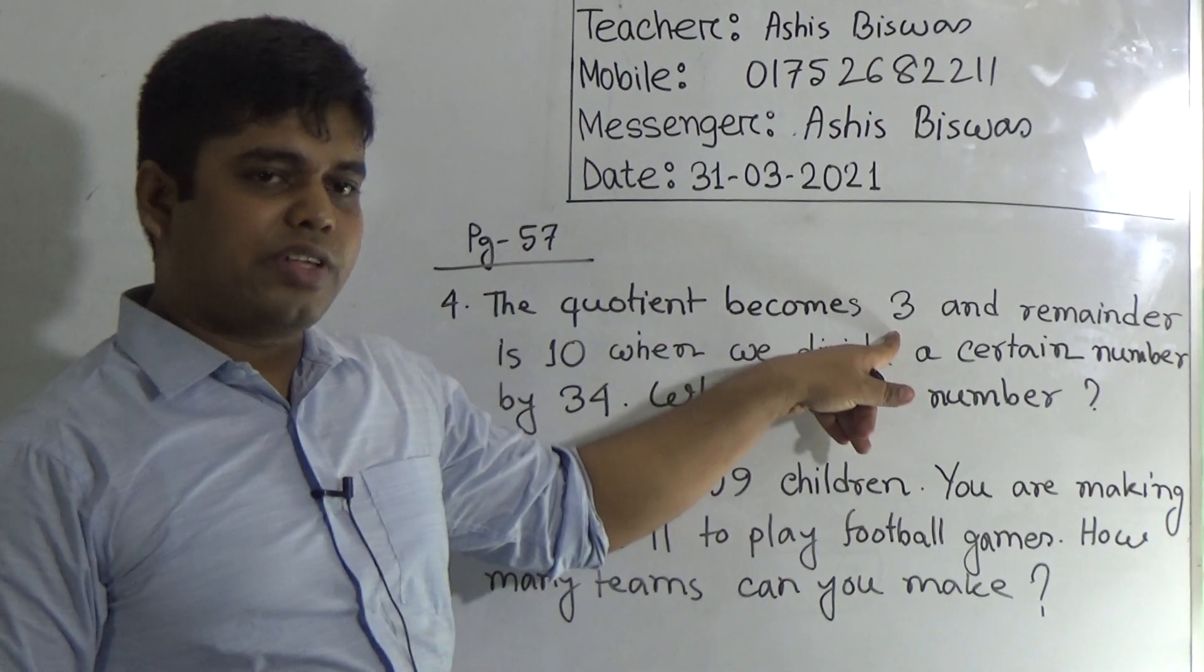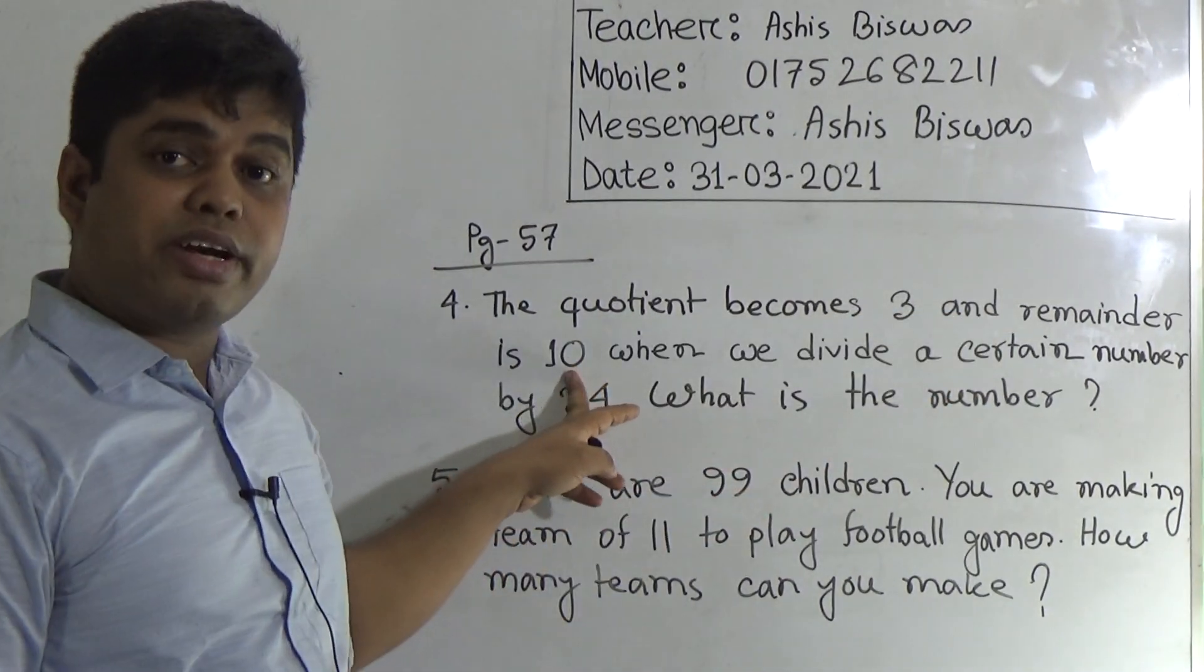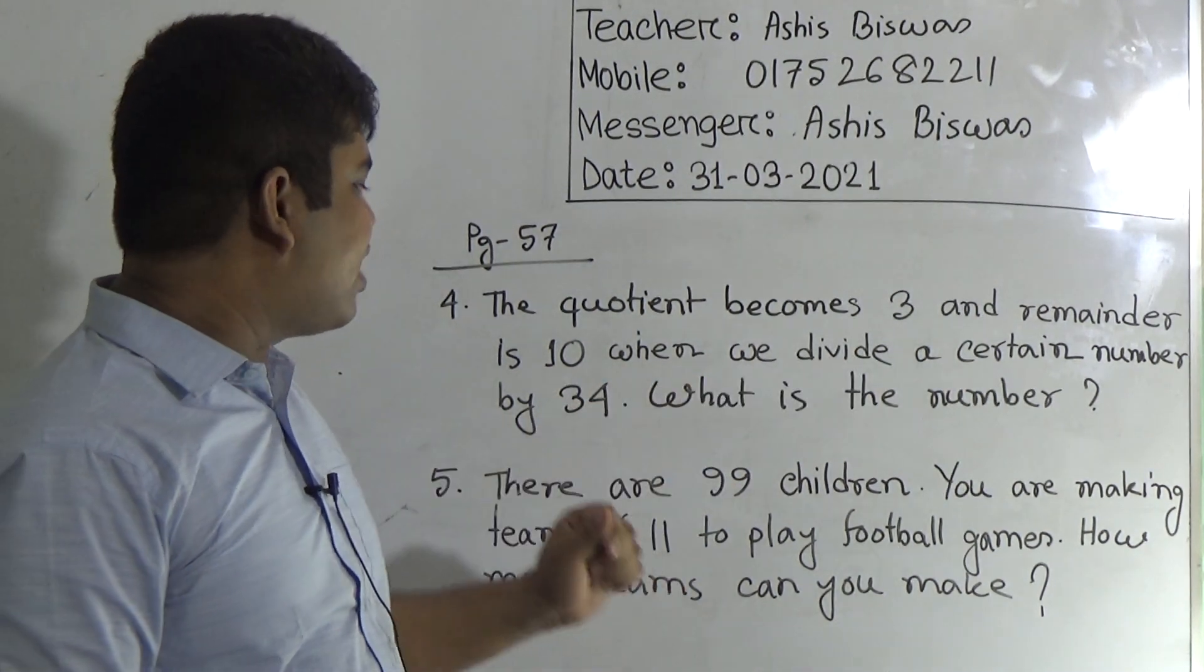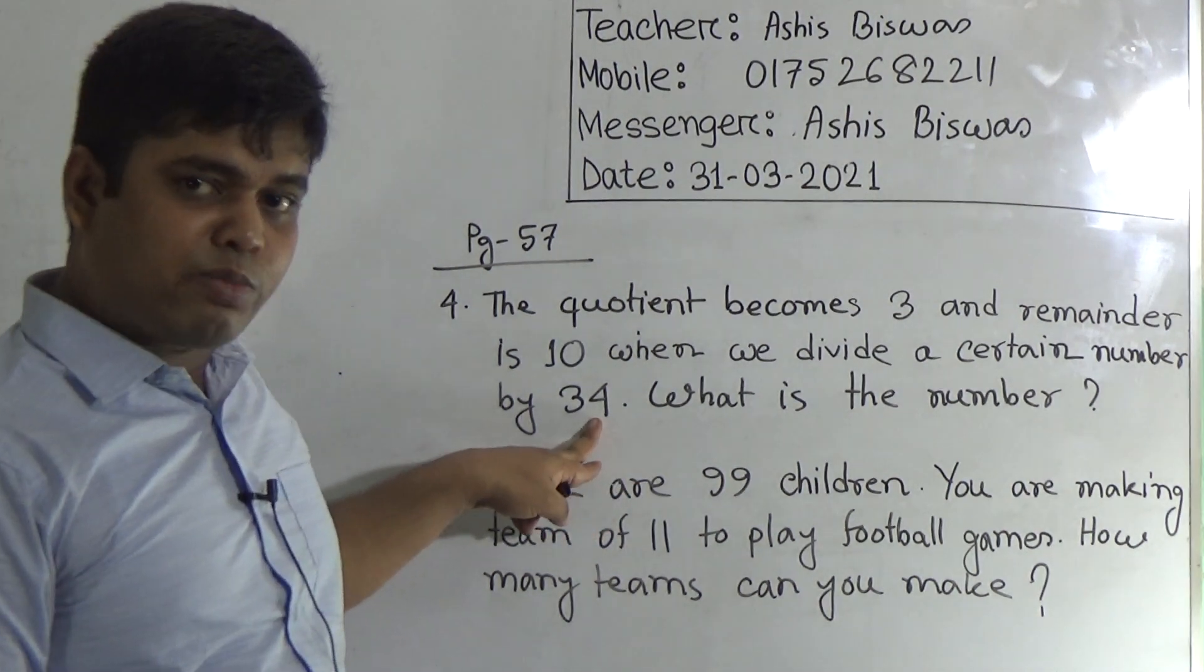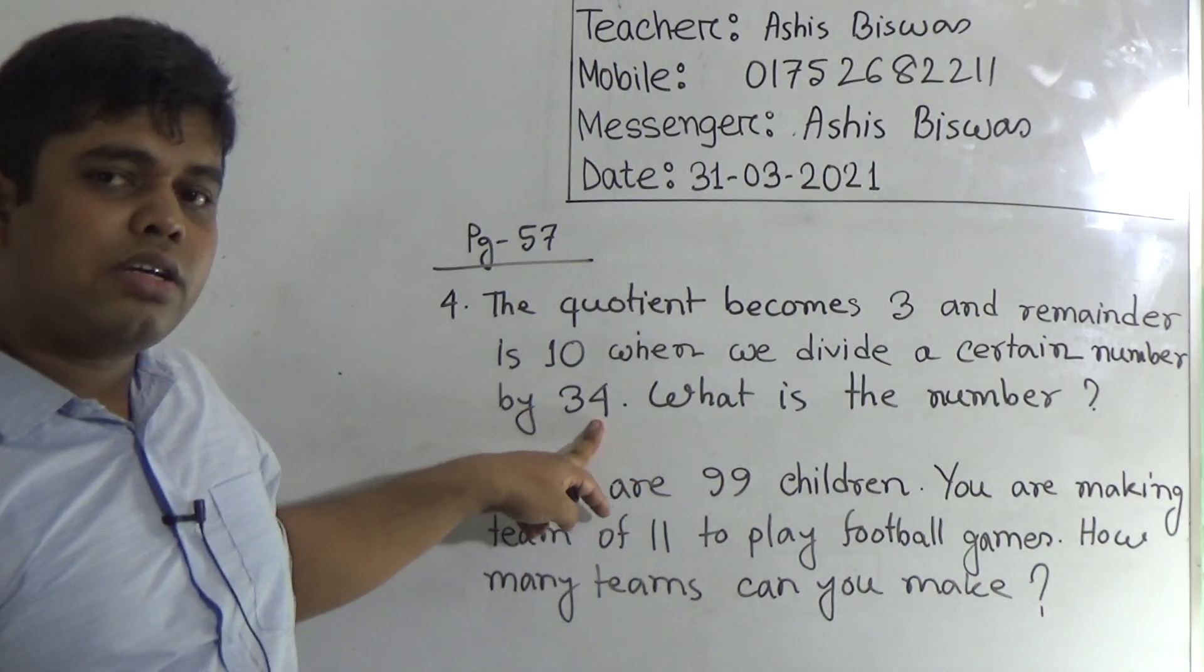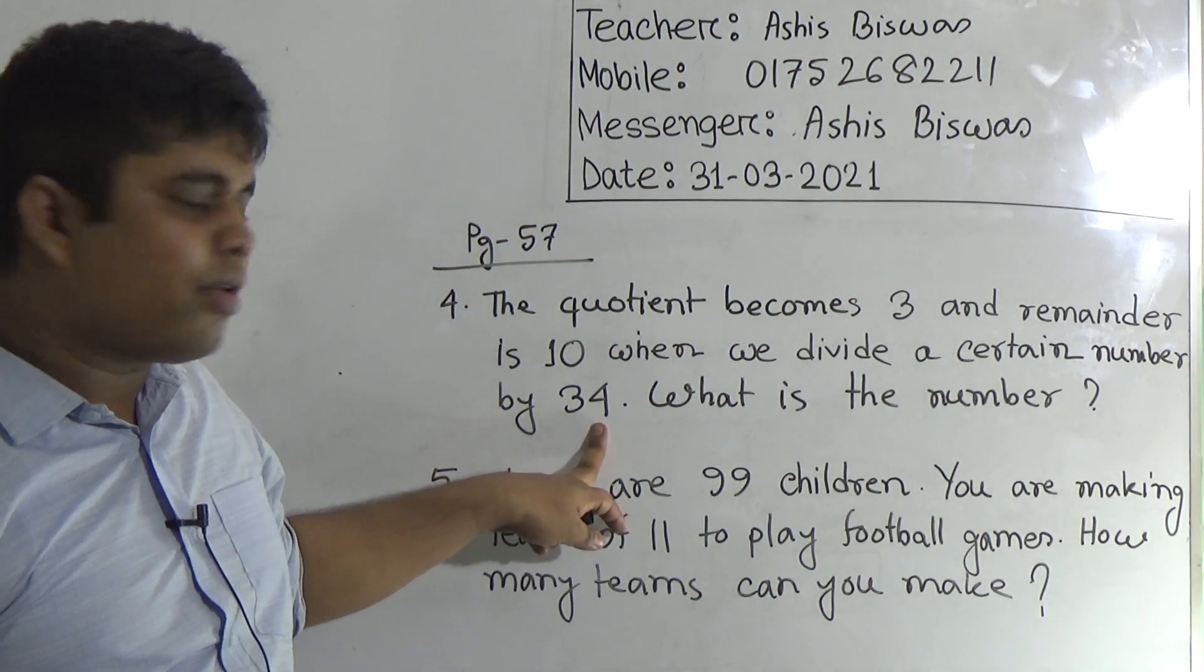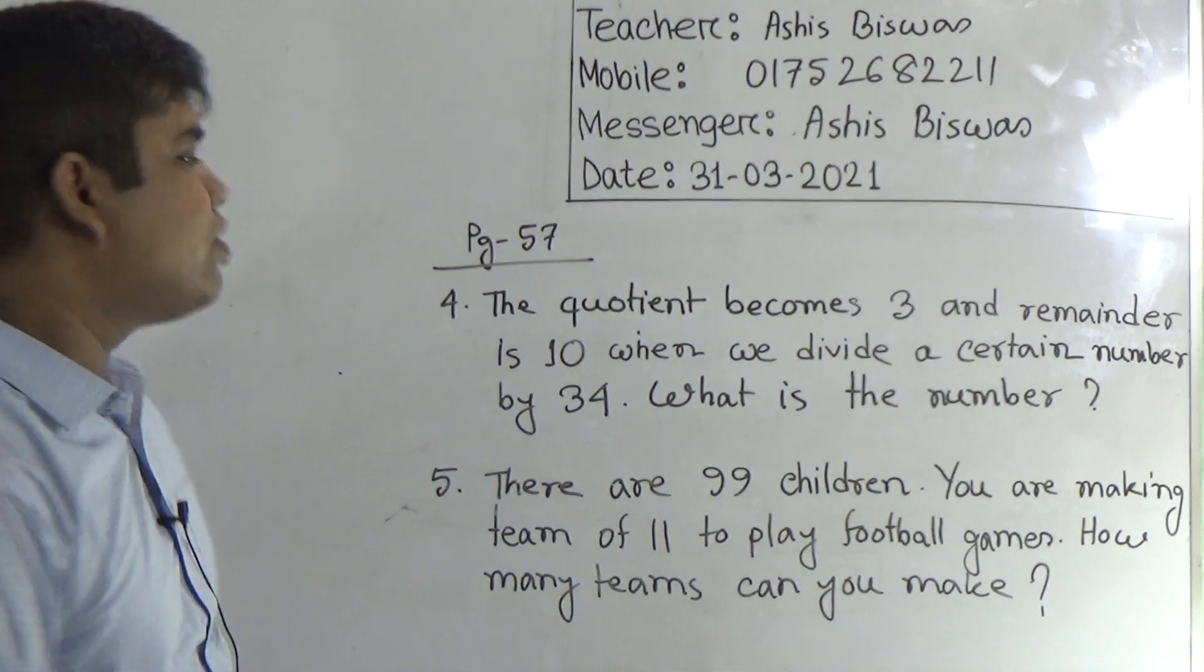Read the question again. The quotient becomes 3, that means here quotient is 3. And the remainder is 10. When we divide a certain number by 34, that means a number is divided by 34, so it is called divisor. So here divisor is 34. What is the number? That means we need to find out the dividend.